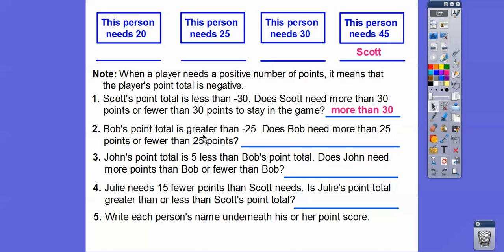Bob's total is greater than negative 25. On a number line, negative 25 is way over to the left, and Bob is to the right of that. So does Bob need more than 25 points or fewer than 25 points? If he's greater than negative 25, he needs fewer than 25 points. Bob needs 20 points — that's the only one fewer than 25.